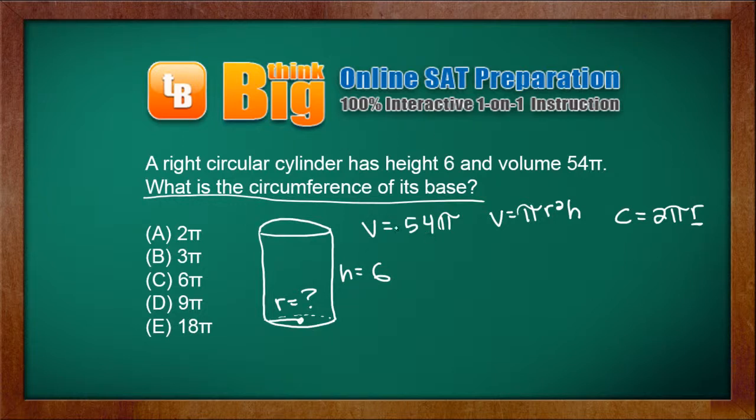You take the volume and plug it in for v. 54 pi equals pi r squared. Take the height, plug it in for h, and solve for r.